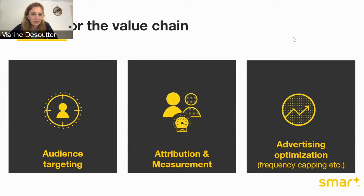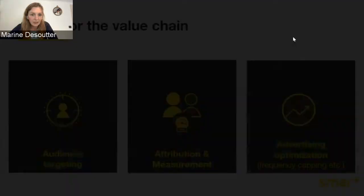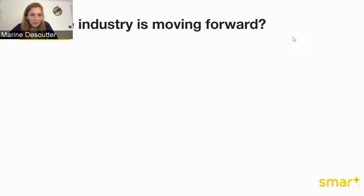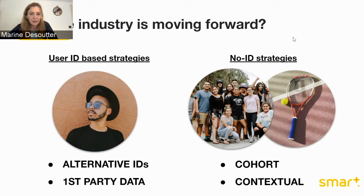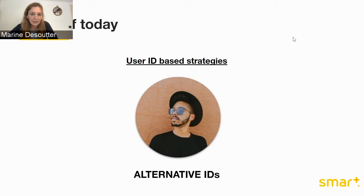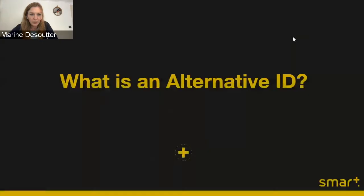The objective for everyone in the industry is to keep doing those strategies with alternative solutions. There are two main approaches. The first is to keep working with user ID-based strategies — here are two examples: alternative IDs and first-party data. On the other side, the option is to work with no-ID strategies, with two main approaches: cohort-based strategies, which is mainly pushed by Google, and contextual targeting, which is also a way to work without any ID in targeting strategies. Today we are going to go deep into the alternative ID strategies.